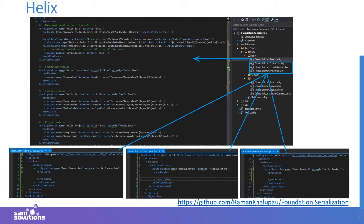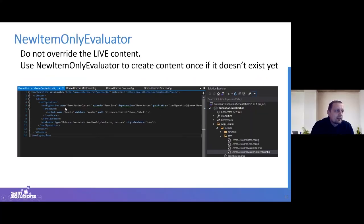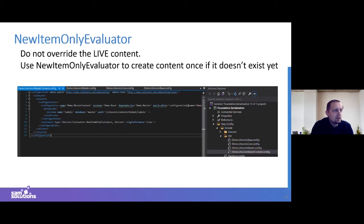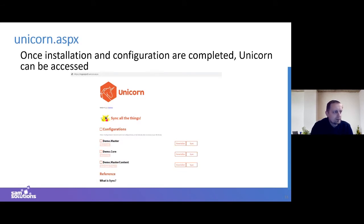If you think about custom content that can be edited by customers, you should be careful not to overwrite already existing content. With Unicorn you can achieve this by using a 'new item only' evaluator to create content once only if it doesn't exist. That way you deploy only new items to the environment and will not override what a customer has edited.